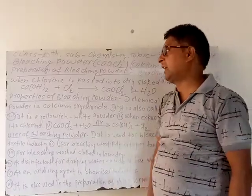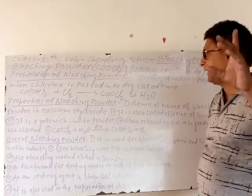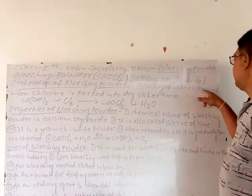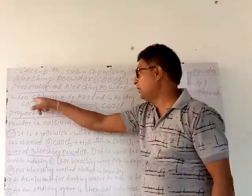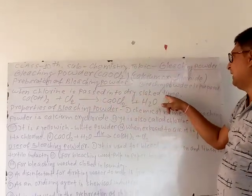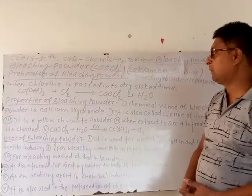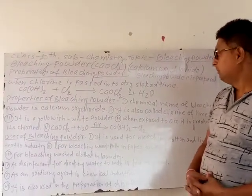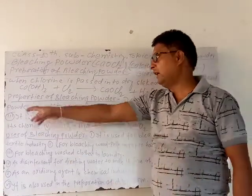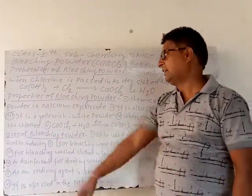Now we will explain the preparation of Bleaching Powder — what is the method to prepare it? When we pass chlorine over slaked lime (dry slaked lime), Bleaching Powder is formed.